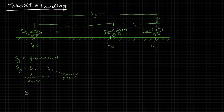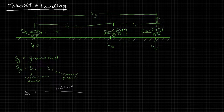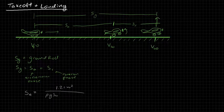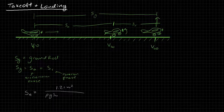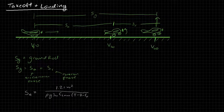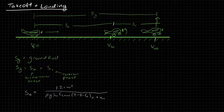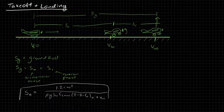And that looks like this. Acceleration distance equals 1.21 W squared divided by rho G SW CL max times T minus D minus the friction force, all evaluated at 0.7 times the liftoff speed, 70% liftoff speed. So this is our approximation for the acceleration distance.